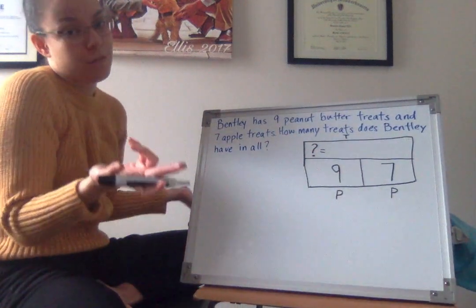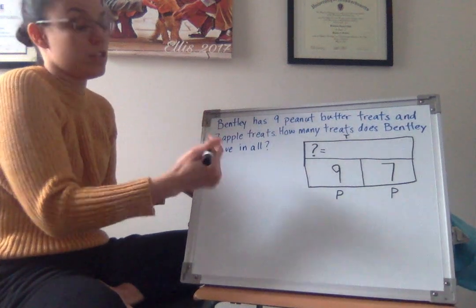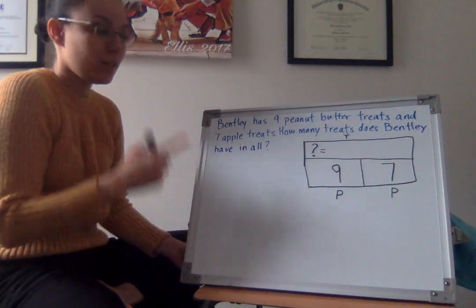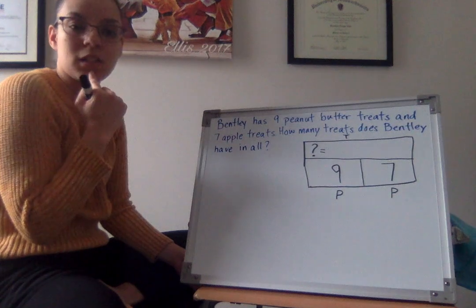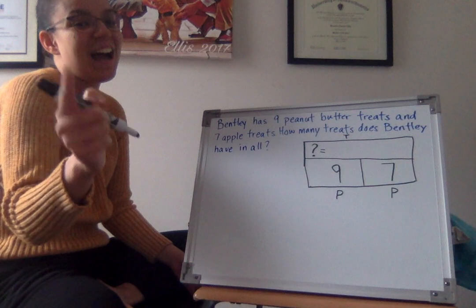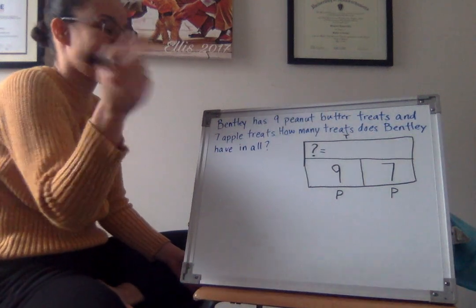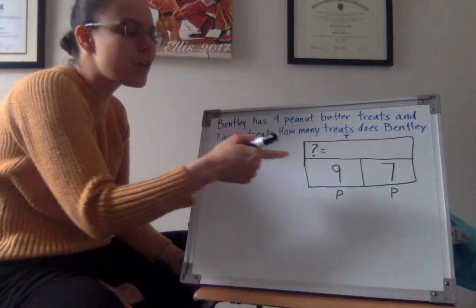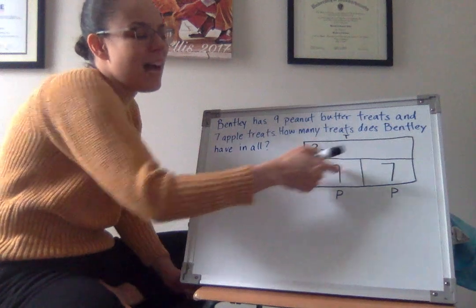We're trying to figure out how many of these treats. So if this diagram doesn't help me to solve the problem, I'm still going to need to use a strategy to figure that out. Hmm. Let me see, what do you think is the fastest strategy I can use to solve this problem? I was thinking the same thing. I'm going to count on.